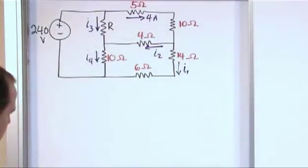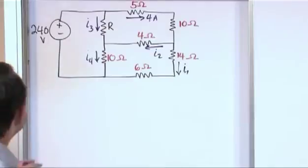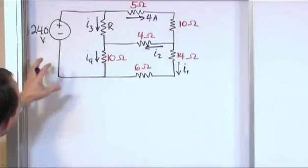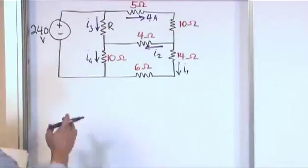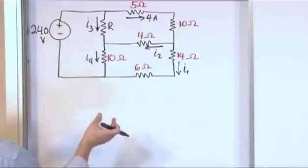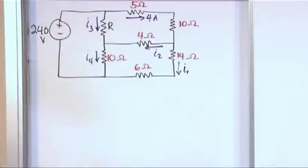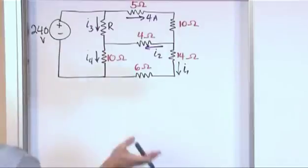And we also don't know if any of these current directions are correct. But now we have all of the current legs labeled. The only one we really don't have labeled is this one. Now you could put I sub five here if you want, but we're not trying to find the power in the source. We're not trying to find anything to do with the source. So leave it off.